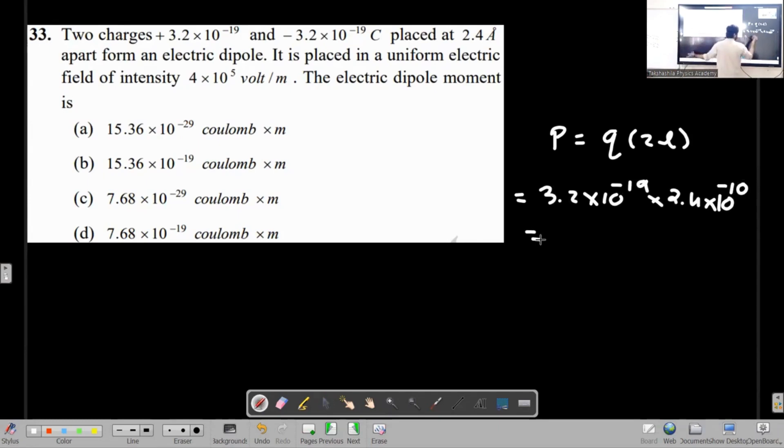5 point something, right? 7 point something. So what do you do? 7 point something into 10 to minus 29. Oh yeah, done. Option C.